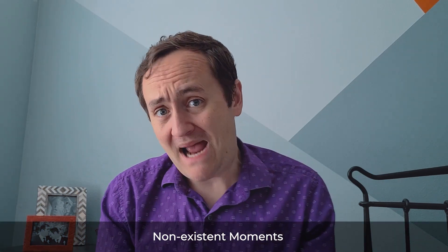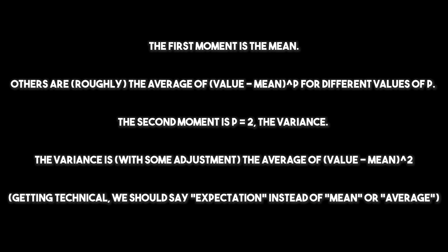Next up are non-existent moments and power laws. Almost all the methods we've been using are about estimating means — or at least moments. A moment in statistics is a statistic based on the distribution of your variable; a mean is an example of a moment, and so is the variance and the skewness. Our estimates have been all about those moments. The problem is that some variables are distributed in such a way that they literally do not have those moments.